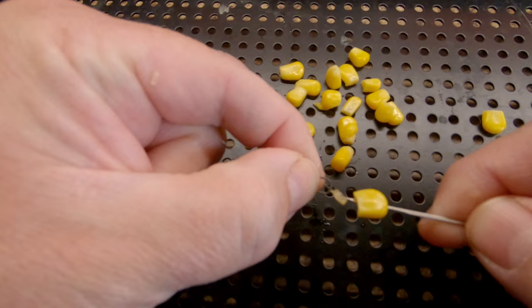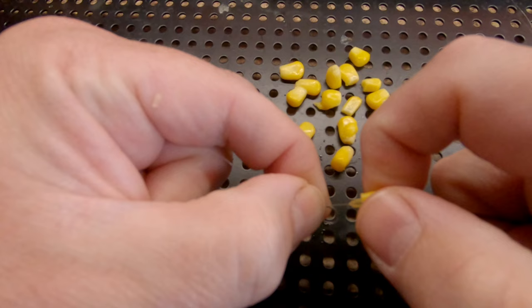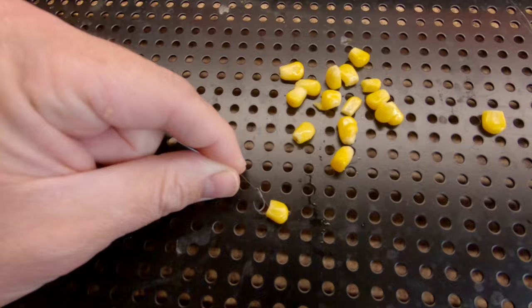Now hook your baiting needle onto the pellet band adding a little bit of tension to make it easier. Slide your grain of corn off the baiting needle and onto the pellet band. A finished hooked piece of sweet corn should look like this.